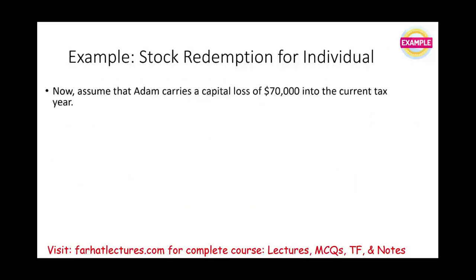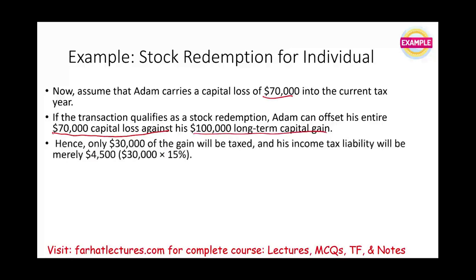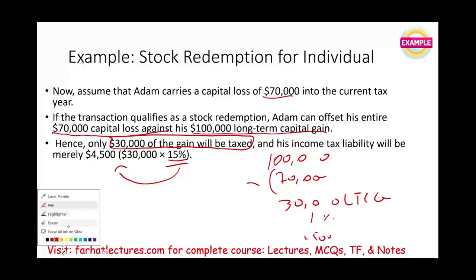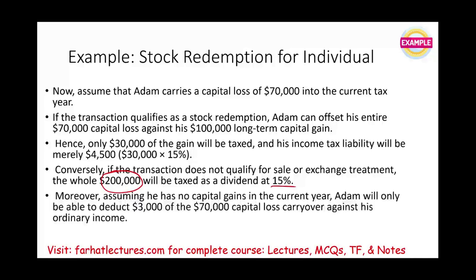Let's change the scenario a little bit. Now let's assume Adam carries a capital loss of $70,000 in the current tax year. If the transaction qualifies as a stock redemption, Adam can offset his entire capital loss against his long-term capital gain. Now his only gain is $30,000, and he will be taxed on that $30,000 times 15% — Adam's tax bill is down to $4,500. He had capital gains of $100,000 from the redemption, but from another source he had a capital loss of $70,000, leaving a net long-term capital gain of $30,000. If the transaction does not qualify, it's $200,000 times 15% — you cannot offset anything.